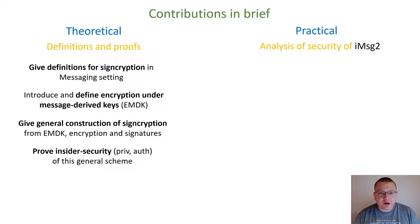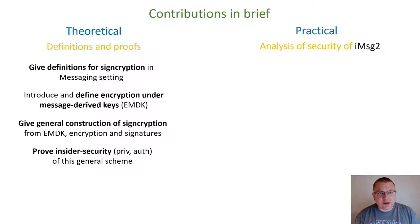Now that we have identified signcryption as the goal, let me summarize our contributions. On the theoretical side, first we give syntax and security definitions for signcryption in the messaging setting. We also define a new symmetric primitive called encryption under message-derived keys, abbreviated as EMDK. Next, we give general constructions of a signcryption scheme from EMDK, public key encryption, and signatures. Finally, we prove the insider security of our scheme.